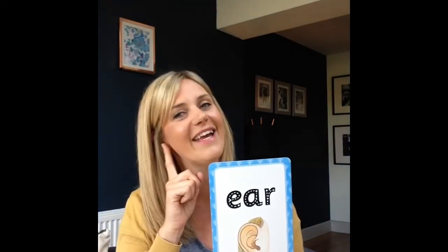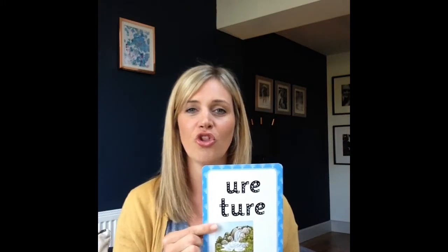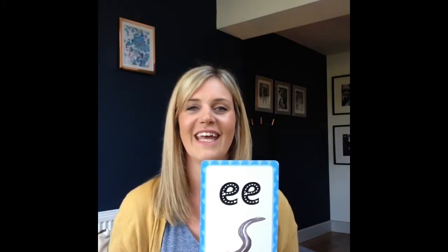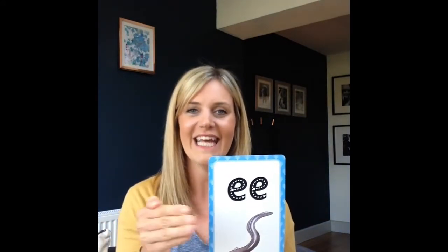EAR as in hear. OO as in fork. Your CH as in pure picture. E as in eel. I as in knight. OO as in bat.